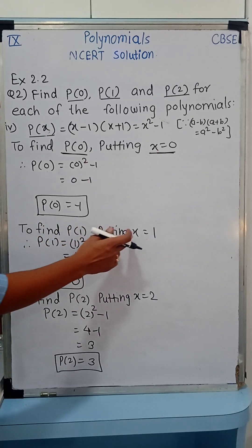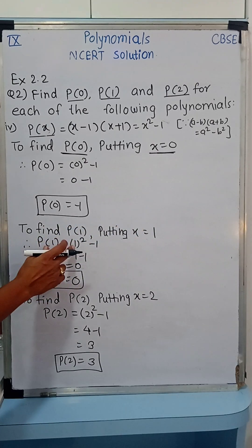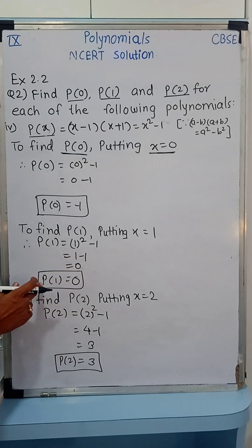Now to find P(1), putting x equal to 1. So P(1), 1 squared minus 1, so 1 squared is 1, 1 minus 1 is 0. And therefore value of P(1) equals to 0.